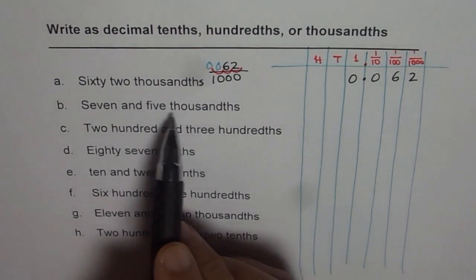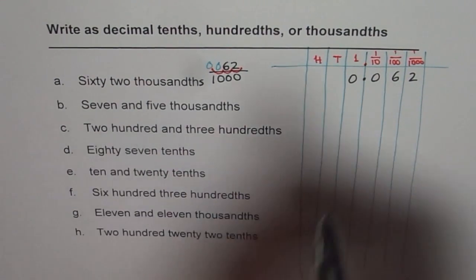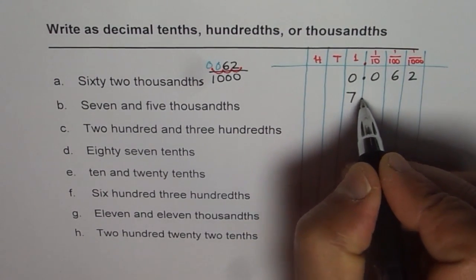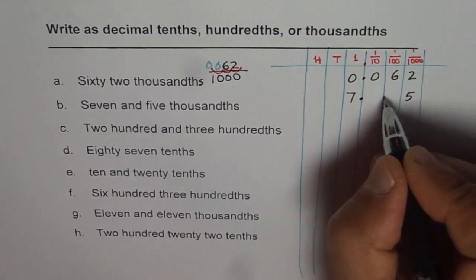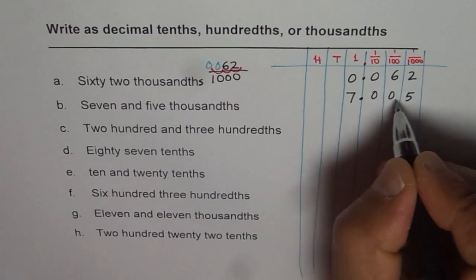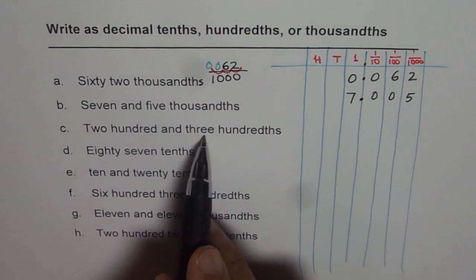Seven and five thousandths. Whenever we have and it signifies a decimal point. Seven comes before decimal. So seven and five thousandths. Five is in thousandths place. So we have a number seven point zero zero five.